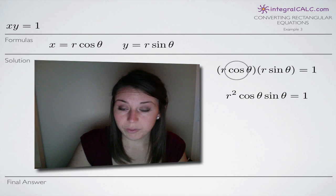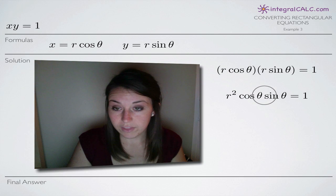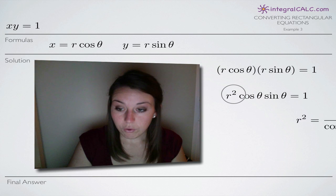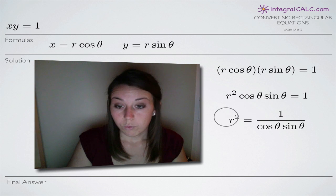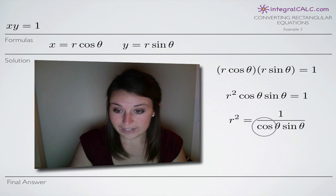We'll multiply these two together and we'll end up with r squared times cosine of theta times sine of theta equals 1. Remember in order to get r squared by itself, we'll divide both sides by cosine of theta times sine of theta. We'll be left with r squared on the left side and cosine of theta times sine of theta becomes our denominator on the right side.